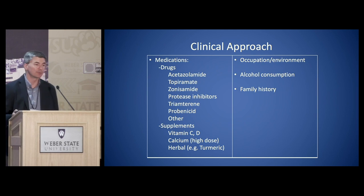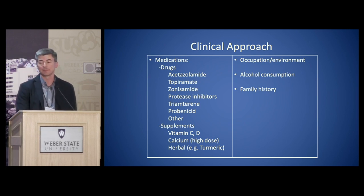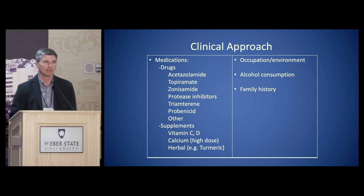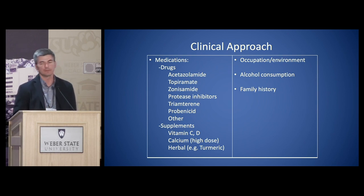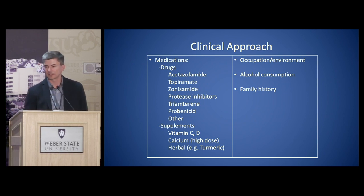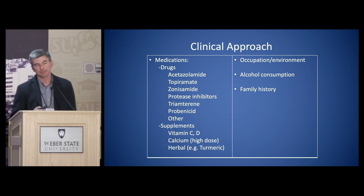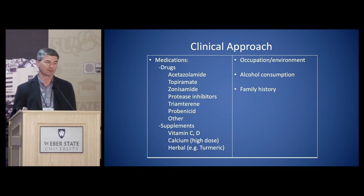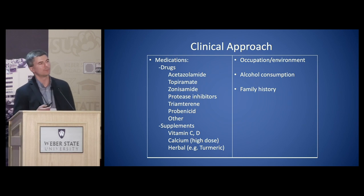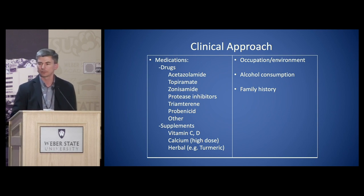There are medications that can predispose to forming stones, such as the carbonic anhydrase inhibitors — acetazolamide, topiramate, zonisamide — which can predispose to calcium phosphate stone formation. Other drugs like protease inhibitors and triamterene can form stones themselves, as can probenecid and others. Supplements like vitamin C and vitamin D are important to track, as are calcium supplements and herbal supplements such as turmeric, which can have a lot of oxalate. I also look at occupational and environmental history regarding bathroom access, fluid intake ability, and dehydration risk, as well as alcohol history and family history of stones.